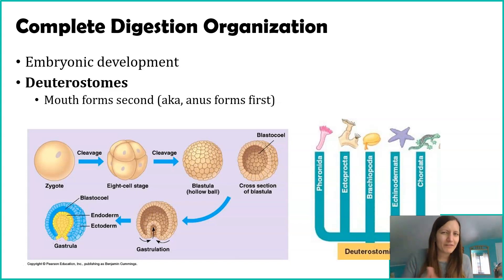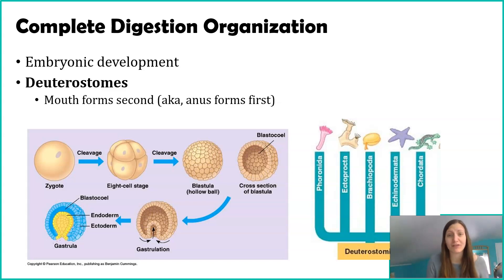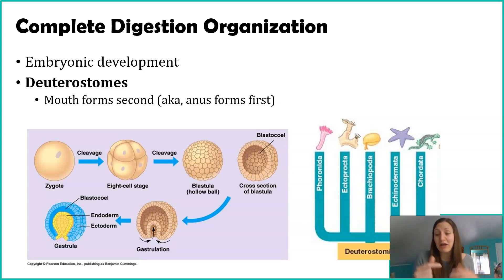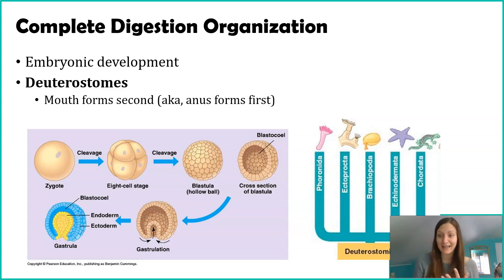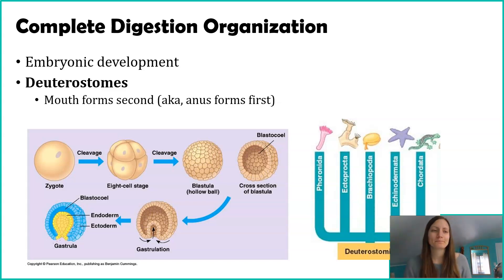Thinking about benefits and drawbacks, scientists don't really know if there's any benefit to the mouth forming first or the anus forming first. It's just that we saw this switch in evolutionary history — not really sure what triggered it, and we don't really see any kind of benefit. This isn't to say there isn't one; we just don't know about it yet. So that was all about digestion.